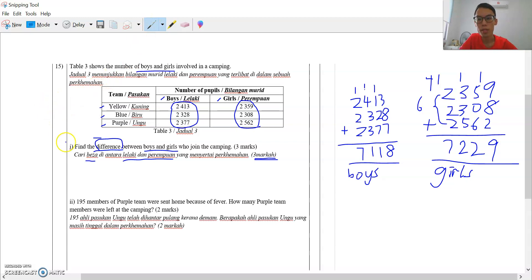So now we can find the difference, cari beza antara lelaki dan perempuan. How do you find the difference? You take the bigger number minus the smaller number. So 3 marks: 1 mark for the total of boys, 1 mark for the total of girls, 1 mark for the final answer.